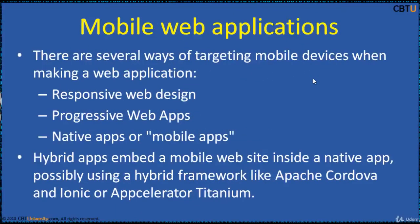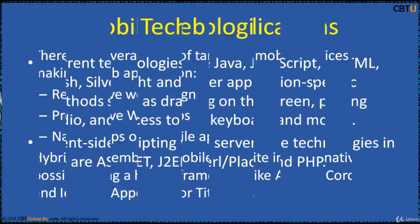There are several ways of targeting mobile devices when making a web application. It can be responsive web design, progressive web apps, or native apps and mobile apps. Hybrid apps embed a mobile website inside a native app, possibly using a hybrid framework like Apache Cordova, Ionic, or Appcelerator Titanium.